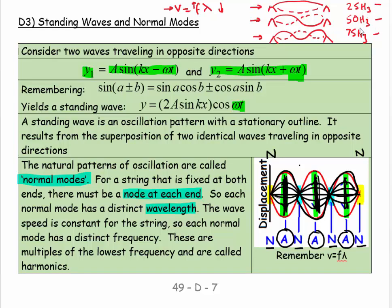25, 50, 75. You could have 10, 20, 30, 100, 200, 300. There's this pattern. And you call the lowest one the first harmonic. And you call the one that's twice the frequency the second harmonic. And you call the one that's three times the frequency the third harmonic. So that's the pattern we're looking at.